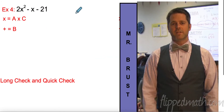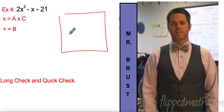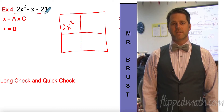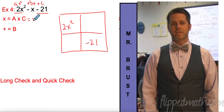Let's do this one. We set up our box: the very first term goes in the first box, the last term goes in the last box — that is automatic. Now, for ax squared plus bx plus c, we multiply a times c. In this case we multiply 2 times negative 21 and get negative 42. The middle term b is negative 1.